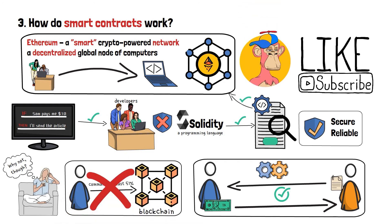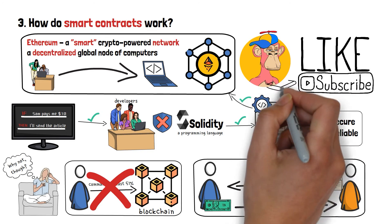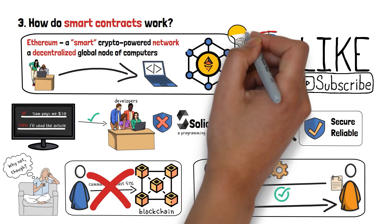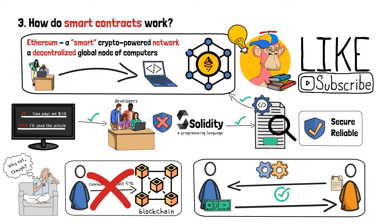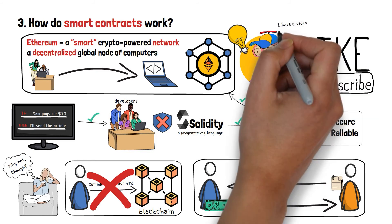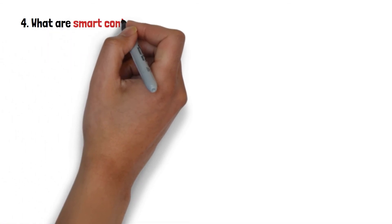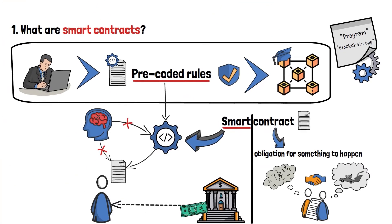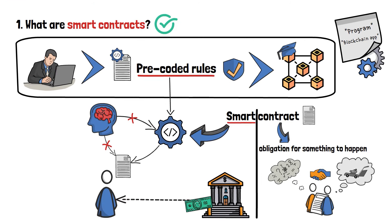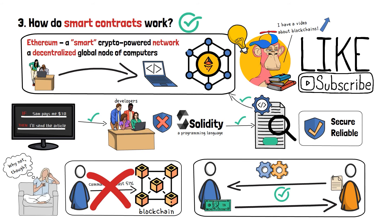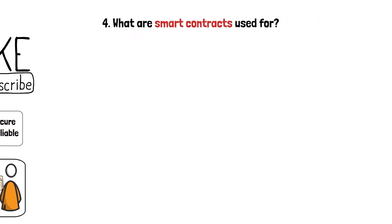If you'd like to find out more about how blockchains work, there is a simple video on that topic you can check out as well. Now, what are smart contracts used for? Thus far, we've covered what smart contracts are and how they perform the processes that they do. As a final point, let's take a look at some examples of what these pieces of technology can be used for.